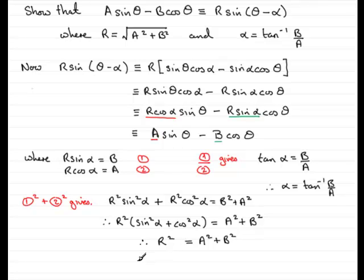So, to get R, all I need to do is take the square root of both sides. So, we get R equals the square root, then, of A squared plus B squared. And there you have R is equal to the square root of A squared plus B squared. Alpha is the inverse tan of B over A.